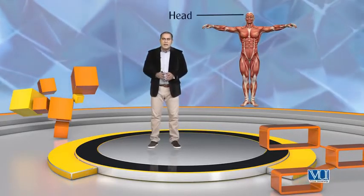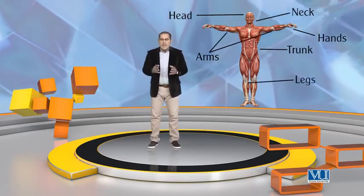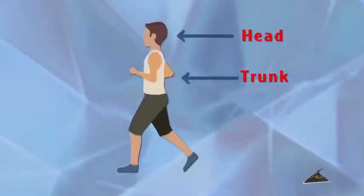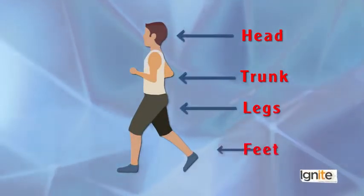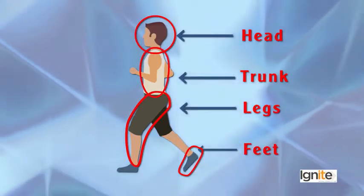ایک اور مثال دیکھئے — human body کے اندر different body parts ہیں head سے لے کے feet تک، جس کے اندر head، neck، trunk، arms، hands، legs اور feet وغیرہ شامل ہیں۔ اگر ہم کسی بھی human body کو as a whole دیکھیں تو معلوم ہوگا کہ ہر human body کے اندر head کا، trunk کا اور legs یا feet کا ایک اپنا comparison اور variation موجود ہے۔